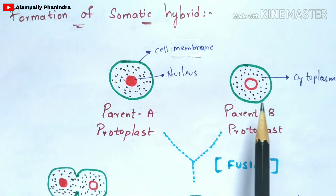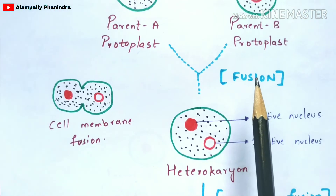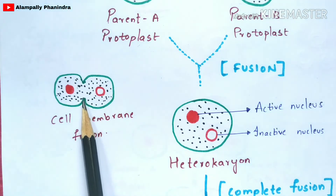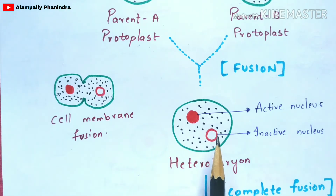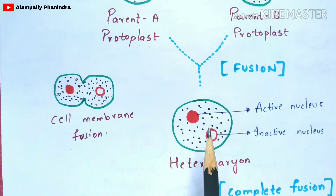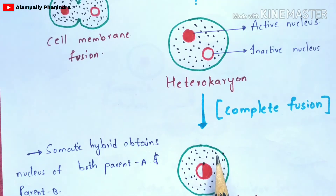Now the Parent A and Parent B protoplasts are fused together. During the fusion process, the first step is cell membrane fusion — the membranes of both protoplasts merge. After cell membrane fusion, it leads to the formation of a heterokaryon, which contains both the active nucleus and inactive nucleus in the same cytoplasm, receiving cytoplasm from both parents.